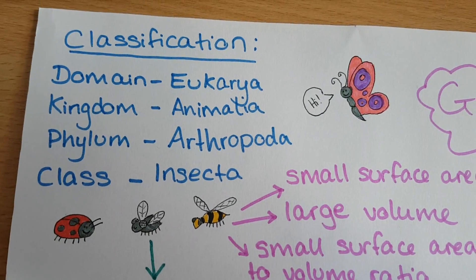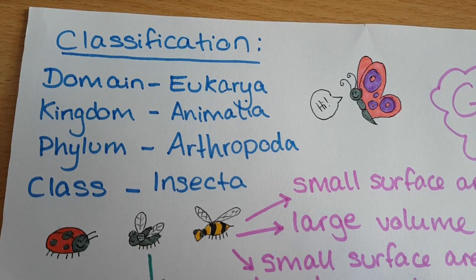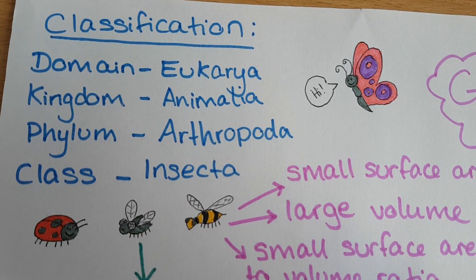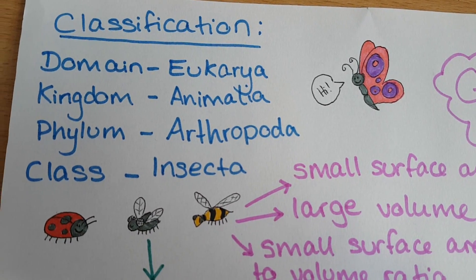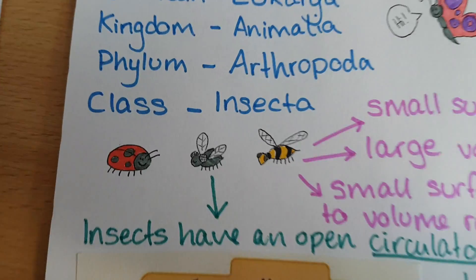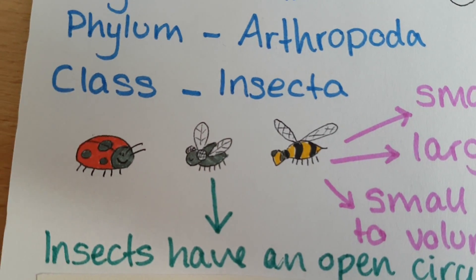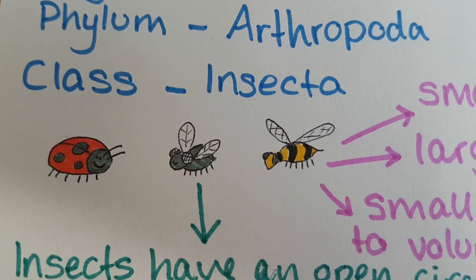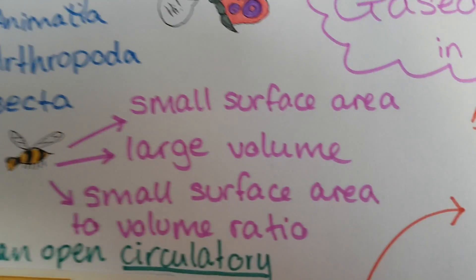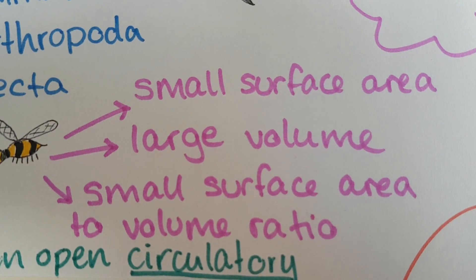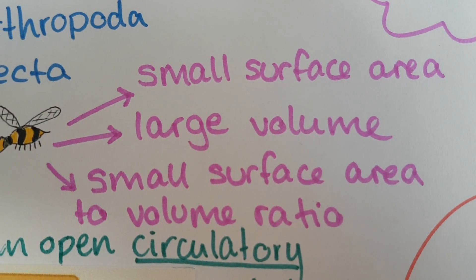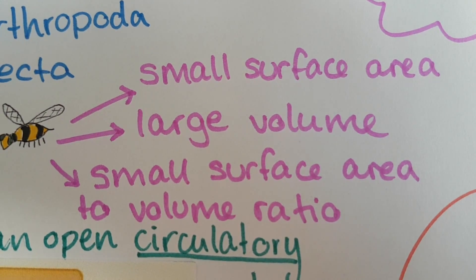Insects are animals like us but they belong to a different phylum, the Arthropoda. The Arthropoda includes spiders as well and things like lobsters and crabs in the sea. One of the classes of the Arthropoda is the insects. Insects are generally characterised by a body plan of having a head, a thorax and an abdomen, and most of them can fly. Insects have a small surface area and a large volume, giving them a small surface area to volume ratio, which means they cannot rely on diffusion alone to get oxygen and carbon dioxide to all of their cells, like a very small organism could, like an amoeba.